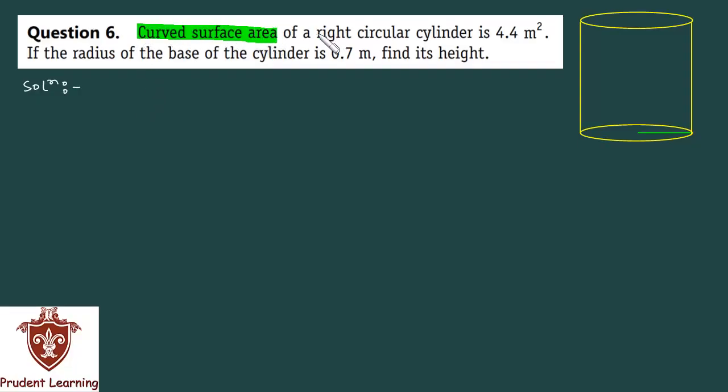Curved surface area of a right circular cylinder is 4.4 meter square. If the radius of the base of the cylinder is 0.7 meter, find its height. It is a very easy question.